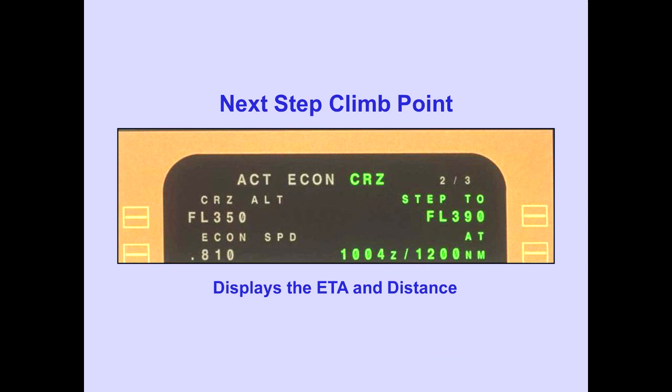In review, the performance predictions are computed on the basis of step climbs taking place. If the crew does not accomplish the planned climb, the FMC will still calculate performance numbers as if they had. The FMC normally computes altitude step points based on the entered step size.